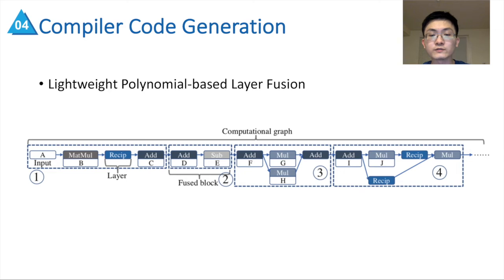The figure shows four fusion candidates for a computational graph. Layer fusion reduces not only the memory consumption of intermediate results, but also the number of operators. This process can significantly reduce the operator number and computation overhead.